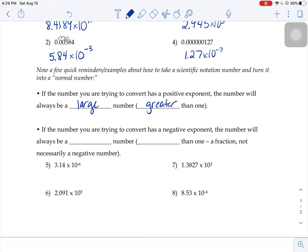And if you see negative exponents, that means it's a relatively small number, less than 1.